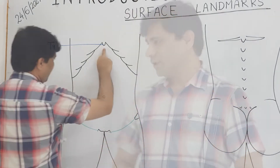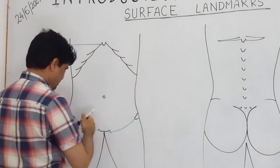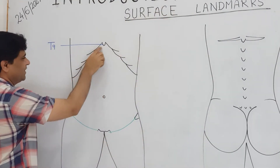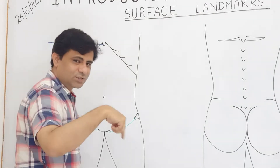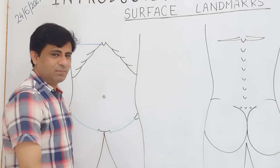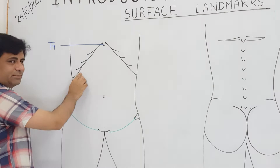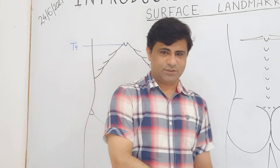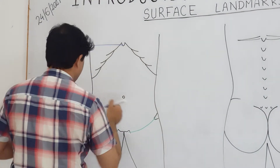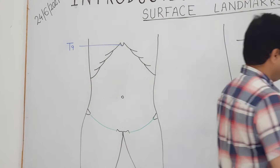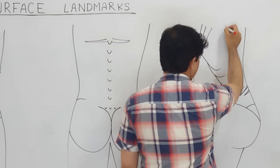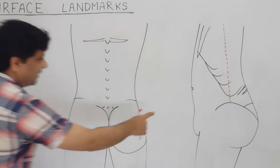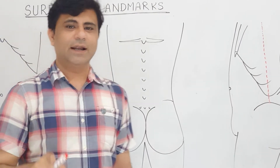The last rib that reaches to the sternum is the seventh rib - it's a true rib. The eighth rib joins its costal cartilage to the seventh rib above. The ninth rib and the tenth rib similarly follow. These costal cartilages form a costal margin anteriorly. In the mid-axillary line, the lowest lying rib is the tenth rib.